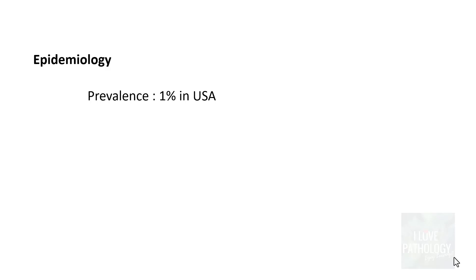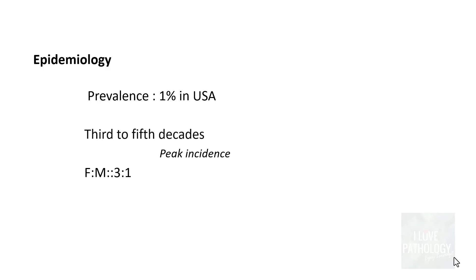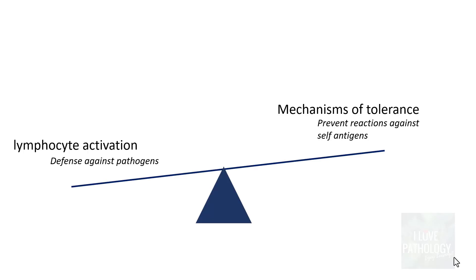The prevalence of rheumatoid arthritis is around one percent in the USA, with peak incidence in the third to fifth decade of life. As with other autoimmune diseases, females are most commonly affected in a ratio of three to one.